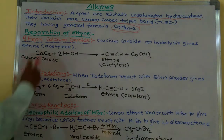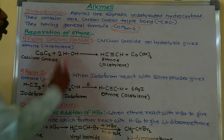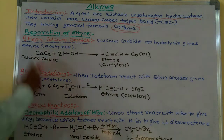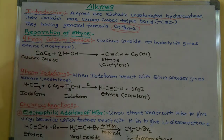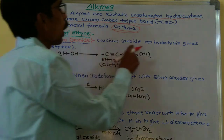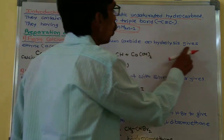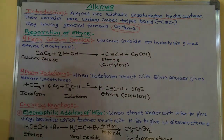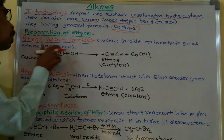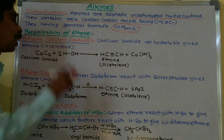Now the next part is the preparation of ethyne, from calcium carbide. Calcium carbide on hydrolysis produces ethyne. The common name of ethyne is acetylene.